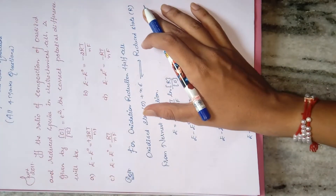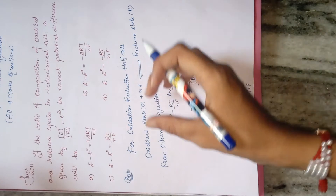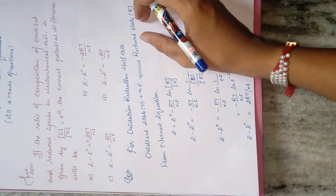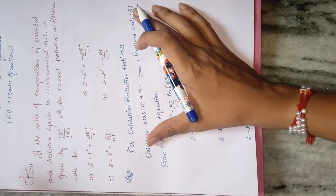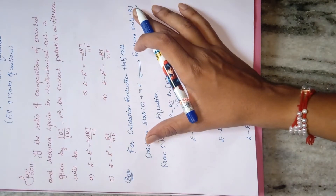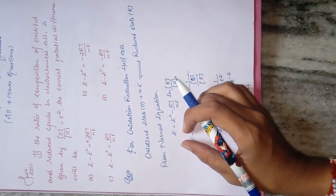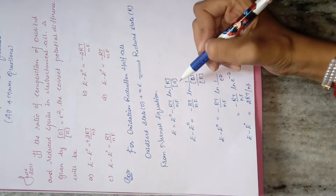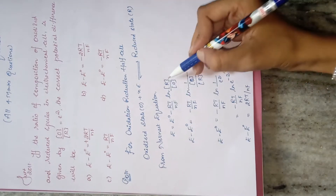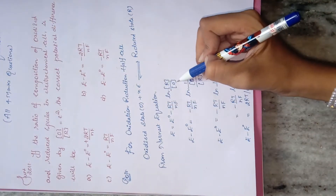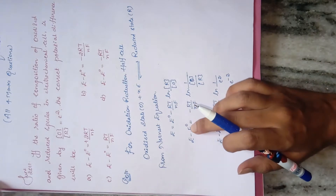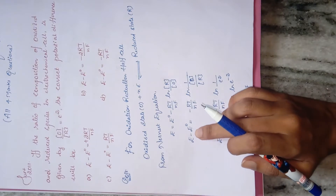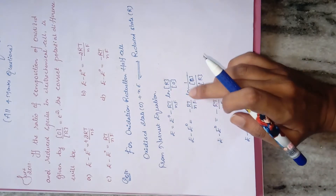For a general oxidation-reduction half-cell reaction, we know that: O + ne⁻ → R. This is the general equation. From the Nernst equation: E = E° - (RT/nF) × ln([R]/[O]). We need to find E - E°, so rearranging: E - E° = -(RT/nF) × ln([R]/[O]).